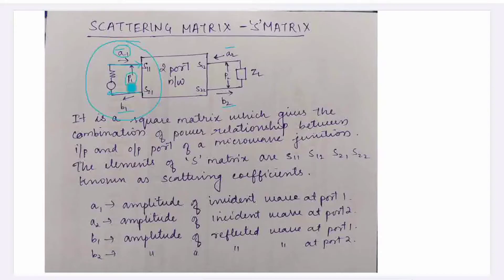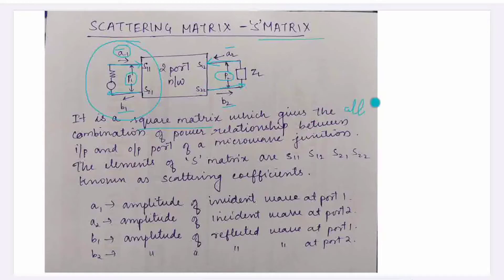If you compare that particular port, there is a reflected wave back. a2 is the amplitude of the incident wave at port 2. The S-matrix is a square matrix which gives all the combinations of power relationship between input and output port.